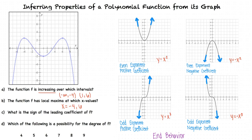So how can we apply this to the graph we have? As we can see, both the left and right ends are pointing downward. Since both ends face the same direction, the degree of the polynomial is even. And since both ends are facing downward, this tells us the leading coefficient is negative.